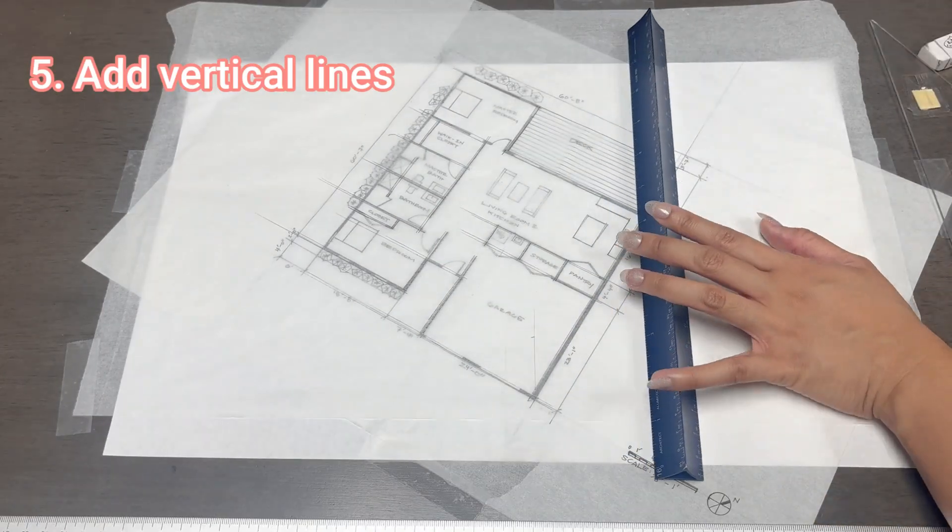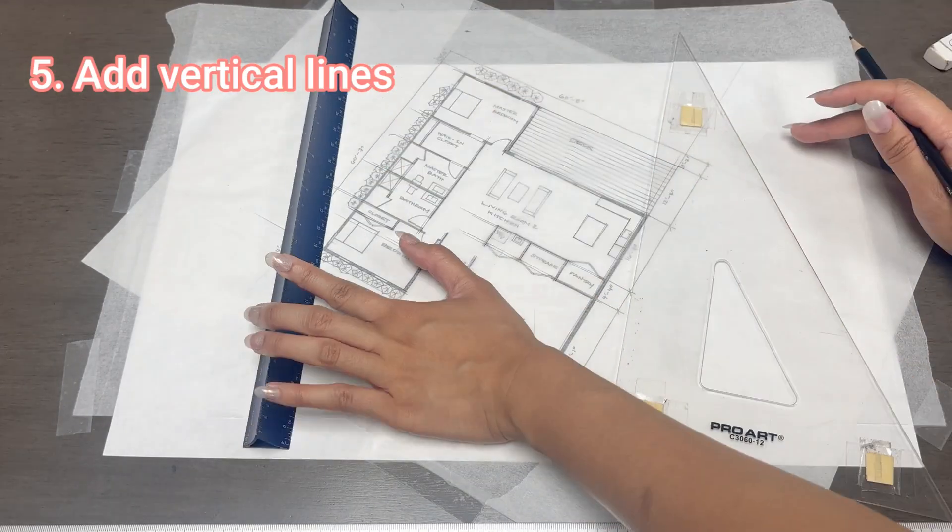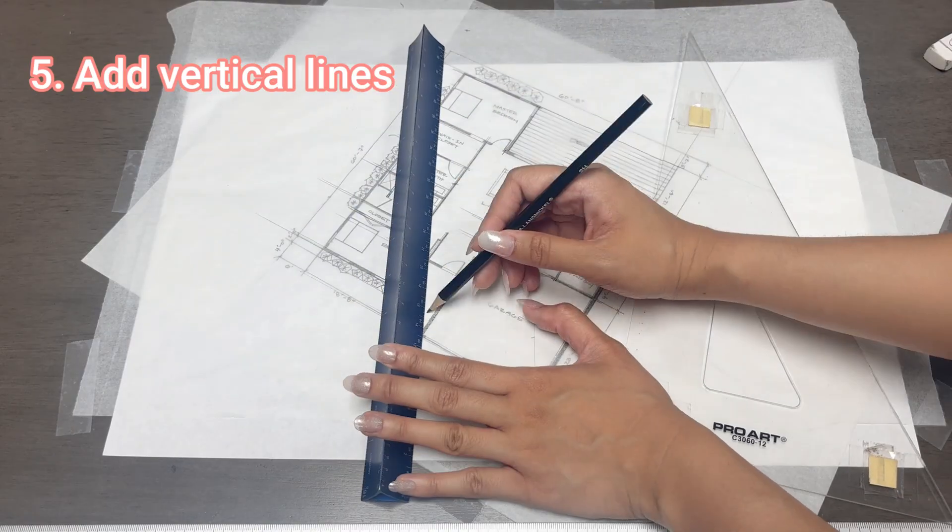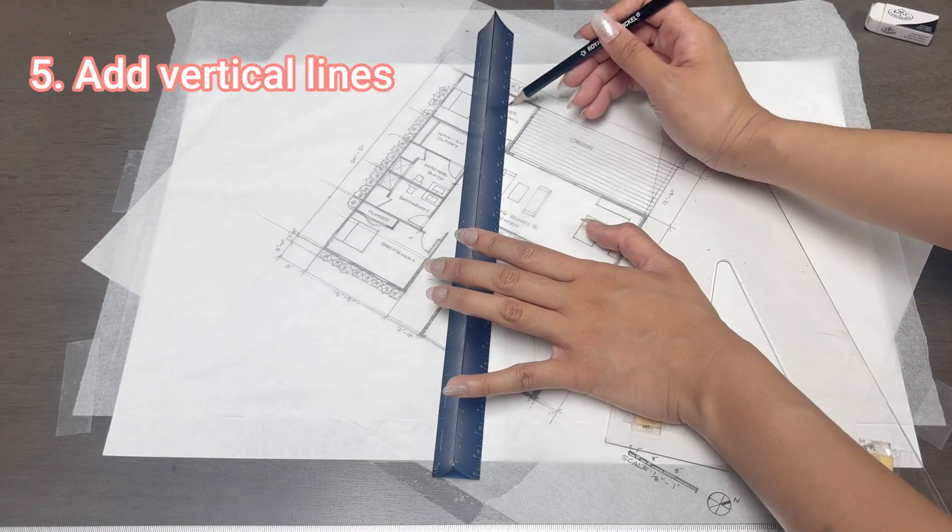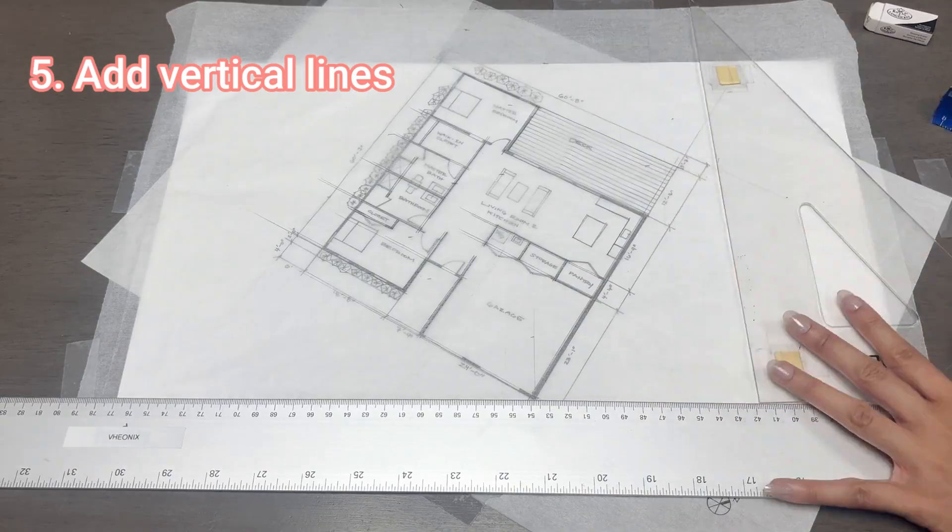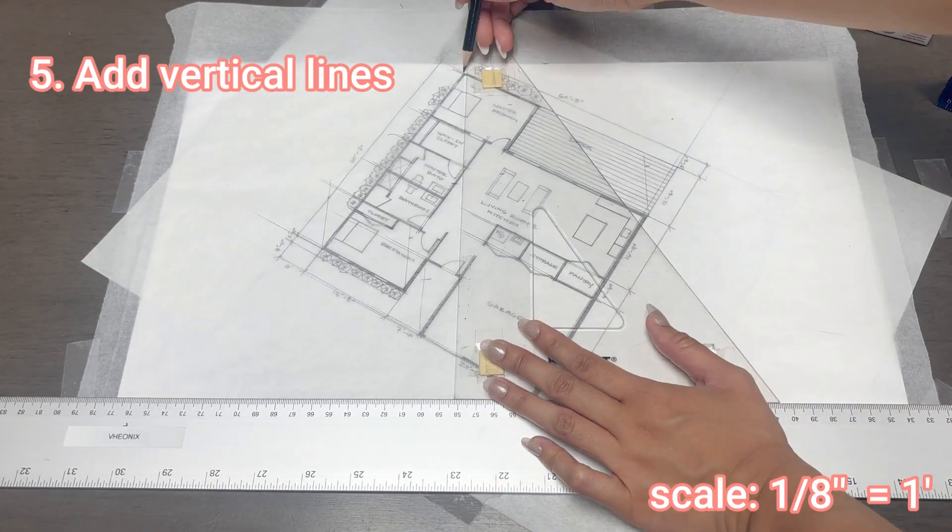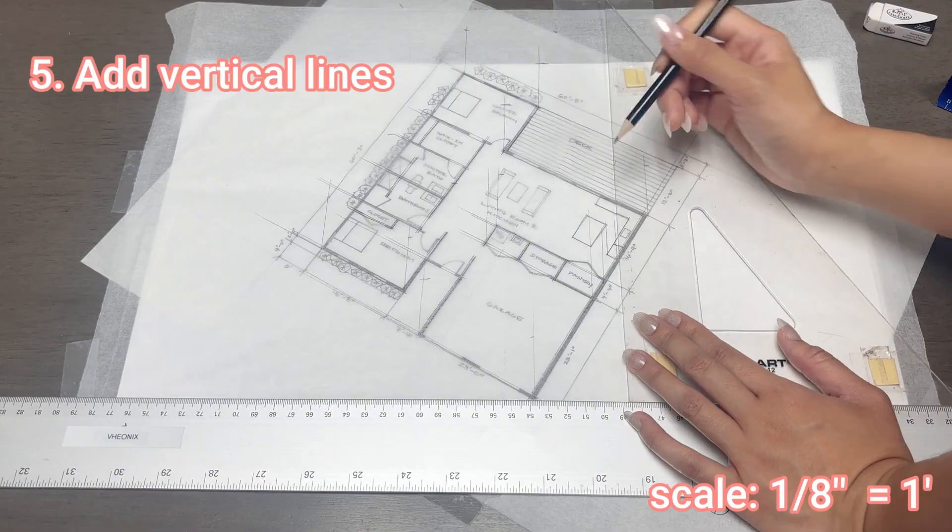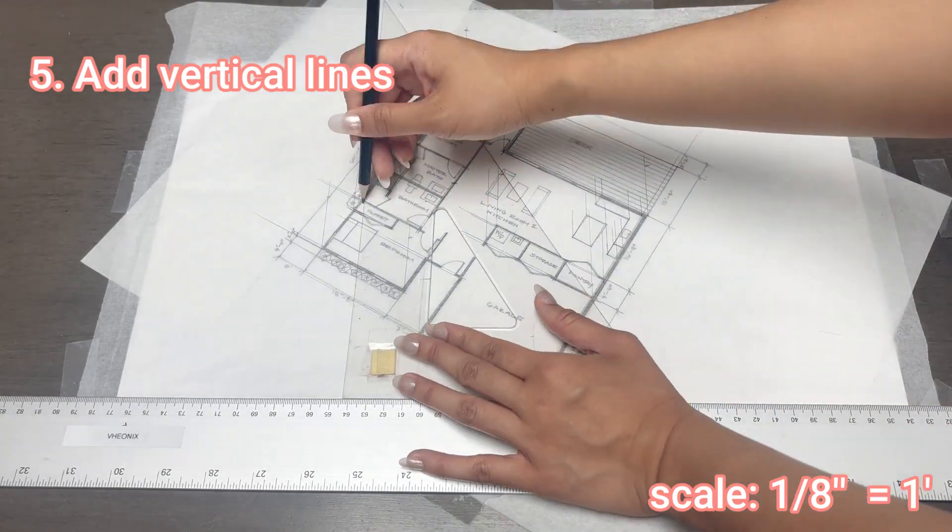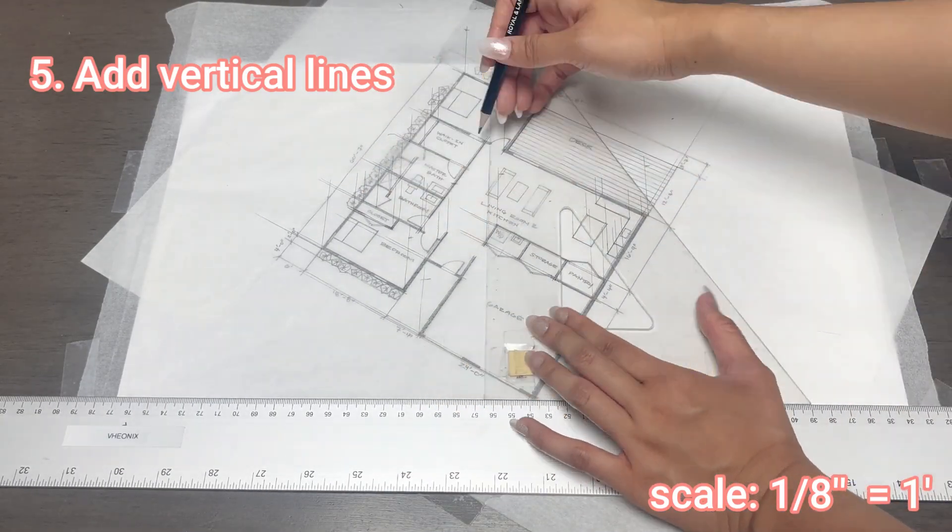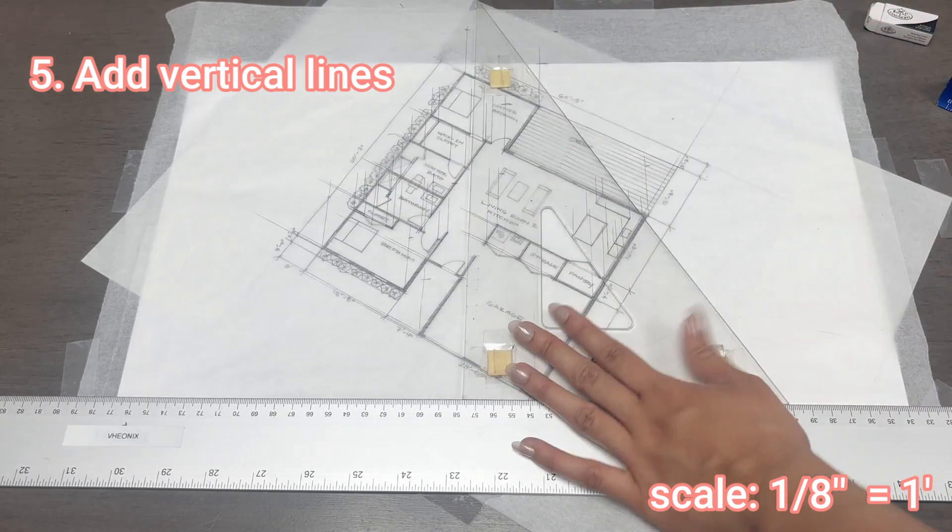Next, you do your vertical lines. And this is the fun part because you raise your walls, doors, and windows to create a three-dimensional look of the space. In this drawing, I'm using a 1/8 inch equals 1 foot scale, and I'm setting my walls at 12 feet. A bit high, but I love high ceilings, so don't come at me please.